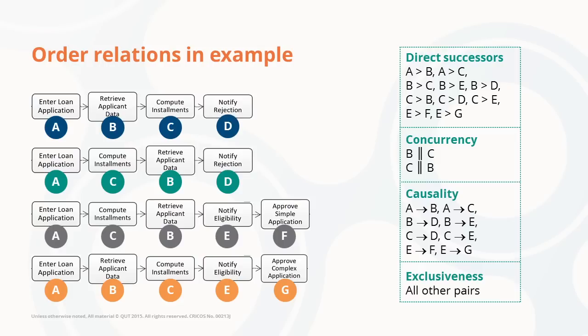There is one interesting thing to note here. In our example, most of the direct successor relationships directly translate to causal relationships. You see, A is followed by B translates to A is causally leading to B, simply because of the fact that B is never followed by A.